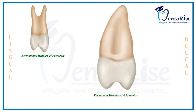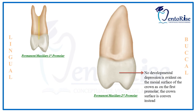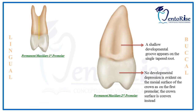The presence of a mesial developmental depression is the second characteristic feature in the anatomy of permanent maxillary first premolar. However, in the permanent maxillary second premolar, no developmental depression is evident on the mesial surface of the crown. But a shallow developmental groove is present in the root.